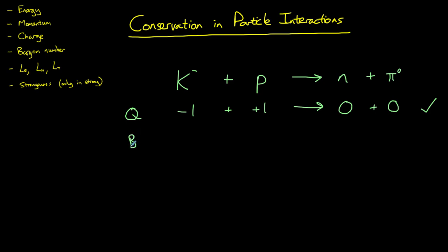Let's check baryon number. A kaon is not a baryon it is a meson. Proton is a baryon it has a baryon number of one. A neutron has a baryon number of one and a pion is also a meson with a baryon number of zero so baryon number is conserved.